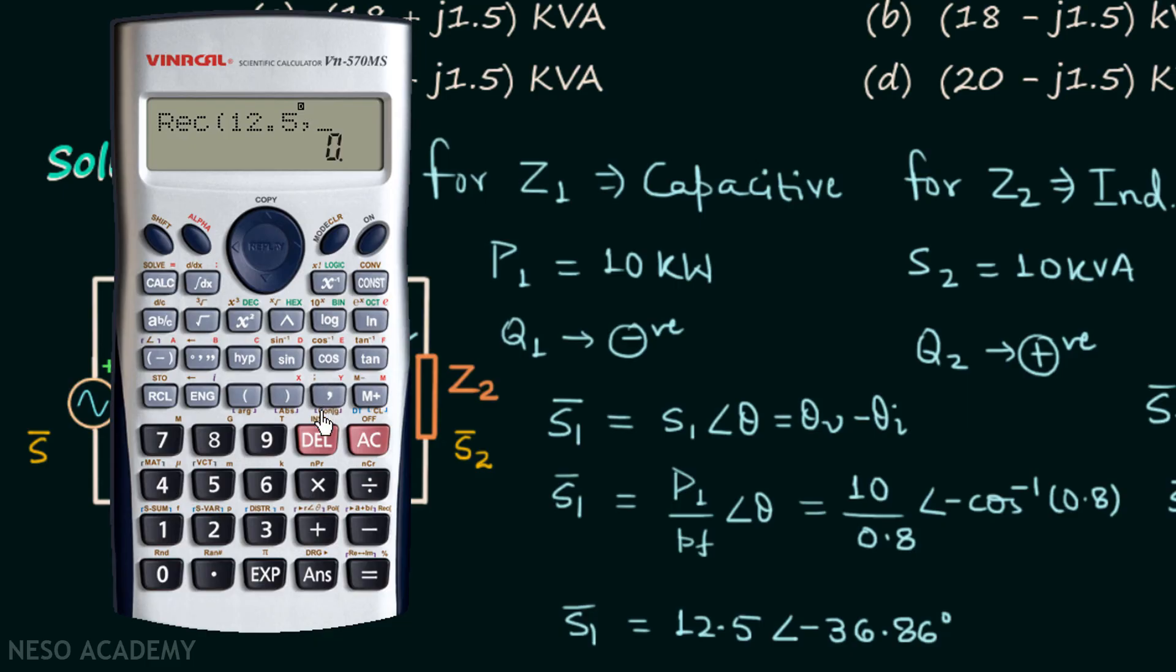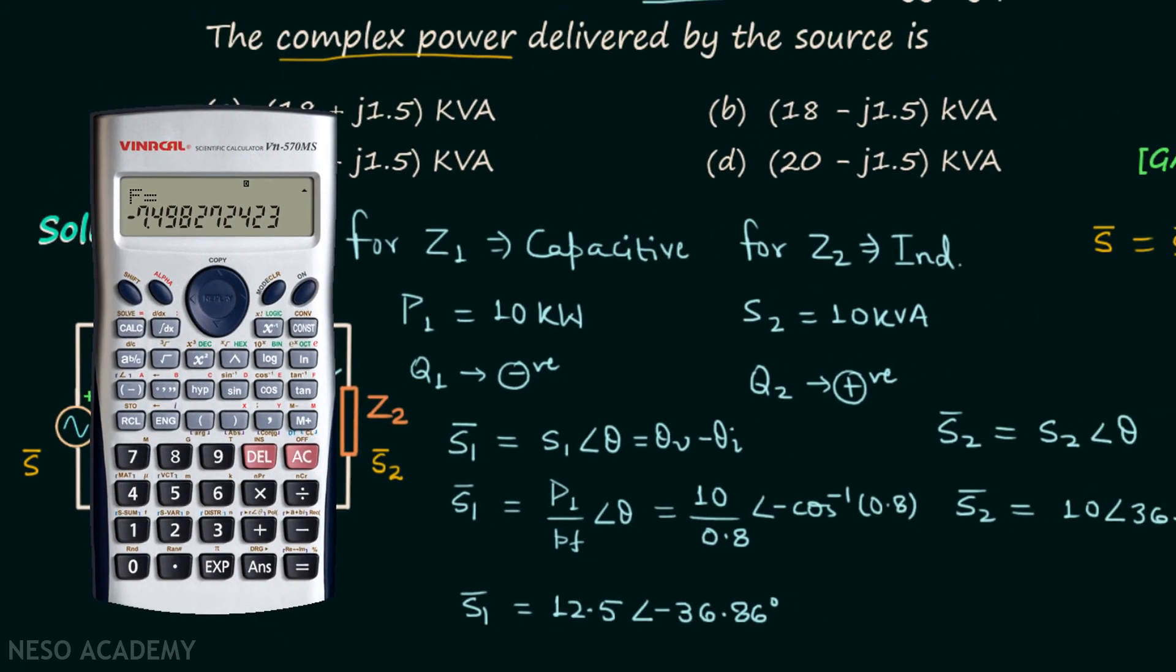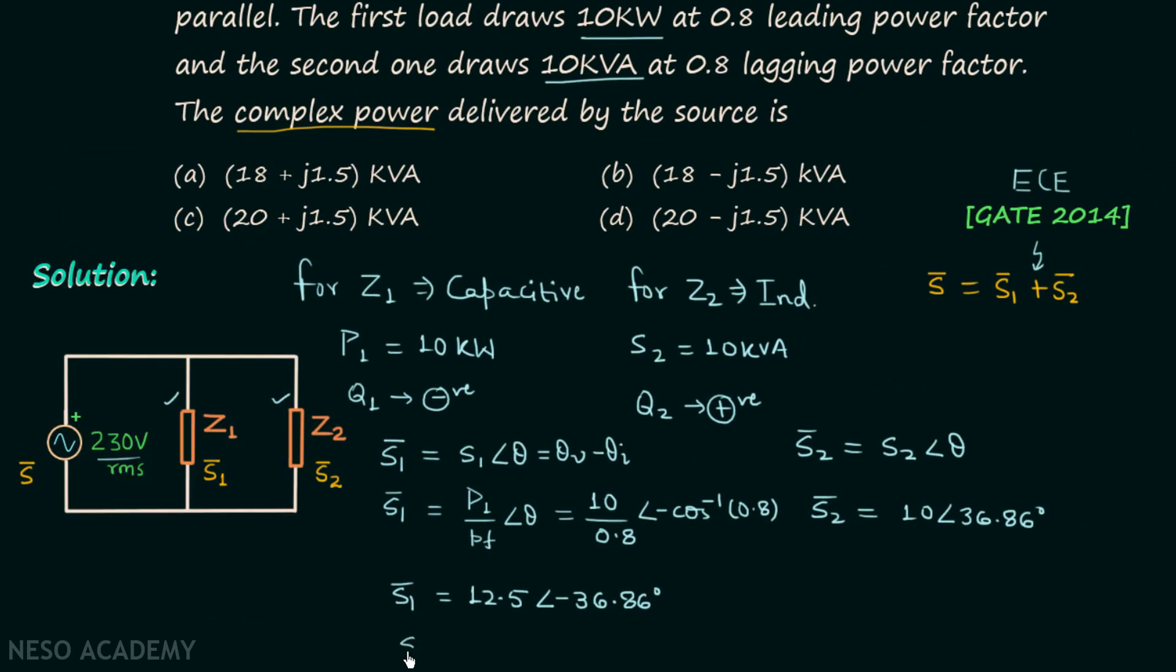Magnitude is 12.5, I will place comma, and then angle is negative 36.86. The bracket I will close now and then I will press on equal. You can see that we have 10 as the real part. To get the imaginary part I will press RCL and then on 10, and we have minus 7.5 as the imaginary part. So we will have S1 equal to 10 minus j7.5.